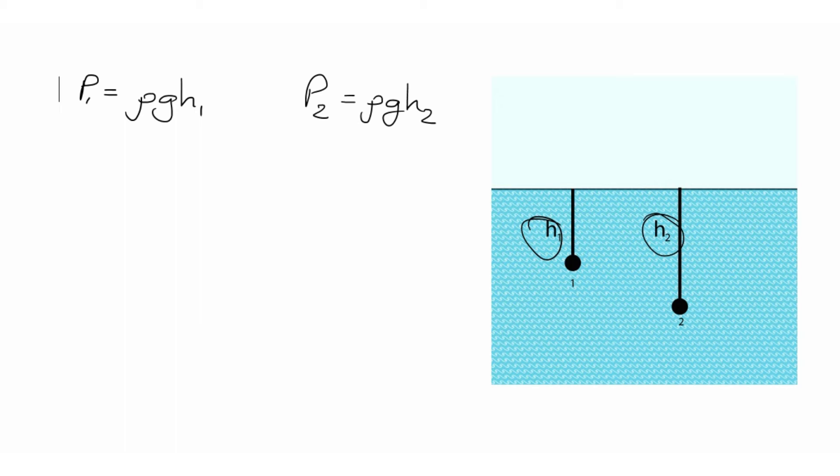So, so we have this. Rho we don't have, but G we have. And H we have. Here, this is what we want. So if you notice here, we can actually take a ratio of these two pressures.